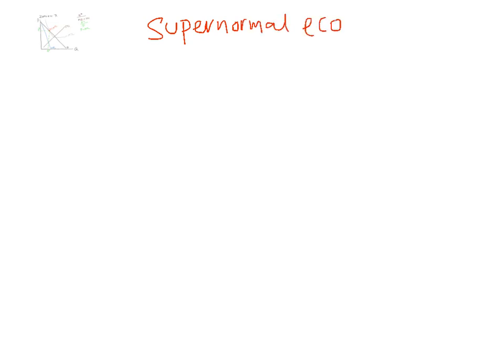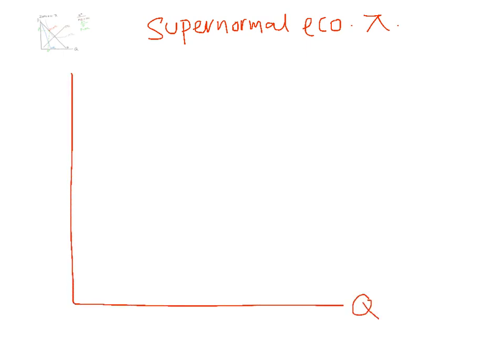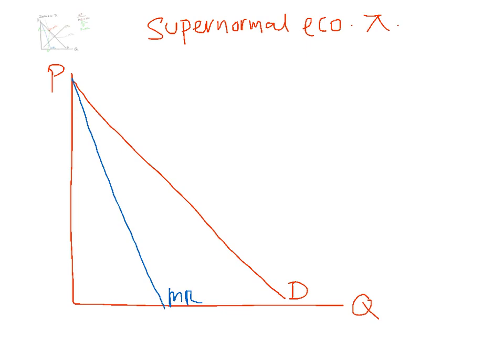Now, look at the situation of supernormal economic profit. Draw your graph. Draw your demand curve. Draw your marginal revenue curve. Draw your marginal cost curve. Then you set marginal revenue equal to marginal cost to find Q star, just like before. Move up the line, touch the demand curve, and you get the price, P star.